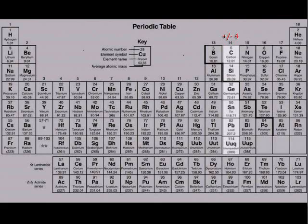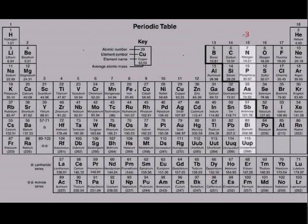Unlike the previous families, the next families are much closer to having complete outer shells. Family five has five valence electrons and needs three more to complete their outer shells. They can take these electrons from other atoms. And since they will take these three electrons, their net charge will be negative three. This means that they will have three more electrons than protons.